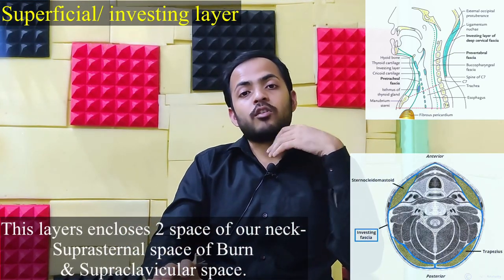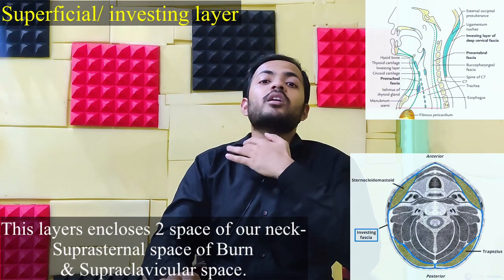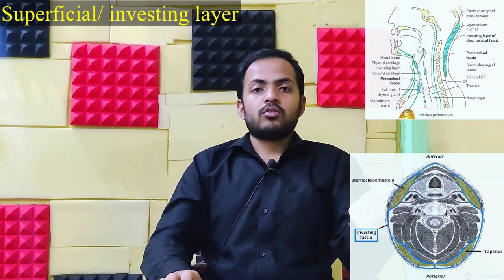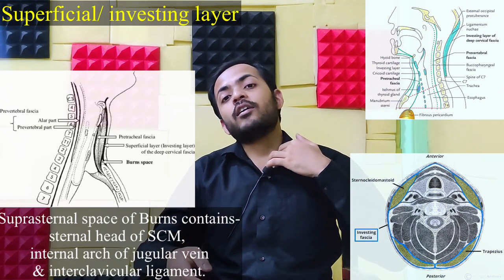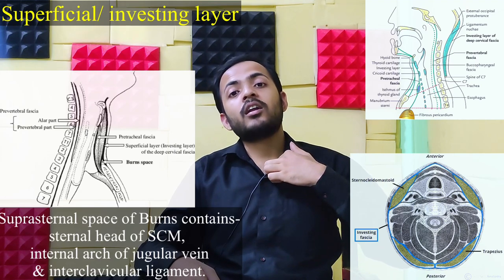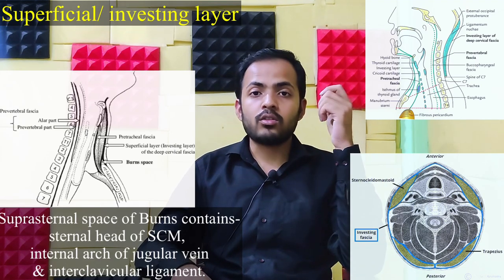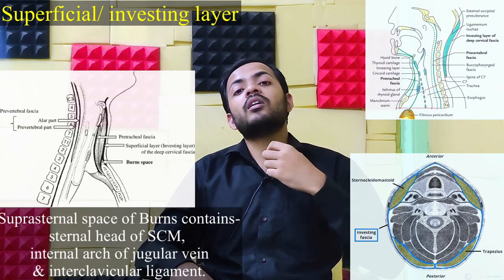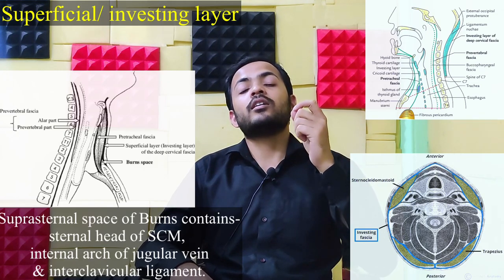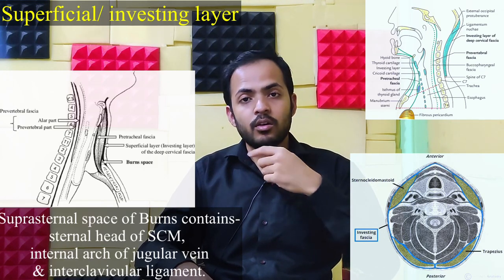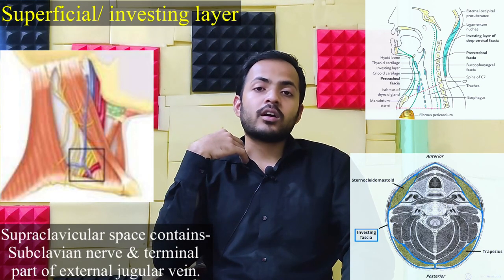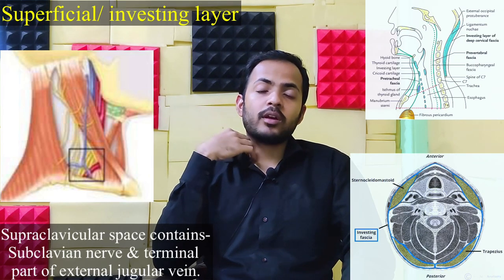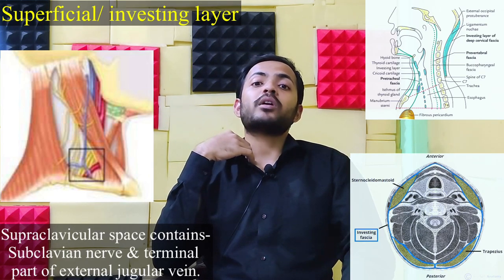The investing layer encloses or covers two spaces in the neck: first, the suprasternal space of Burns, and the supraclavicular space. The suprasternal space of Burns contains the sternal head of the sternocleidomastoid muscle, the jugular venous arch, and the interclavicular ligament — the ligament between the two clavicles. The supraclavicular space contains the terminal part of the external jugular vein along with the supraclavicular nerve.